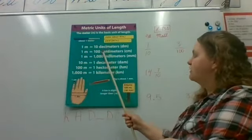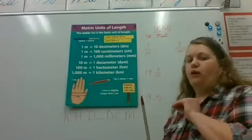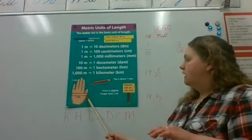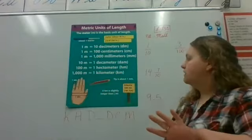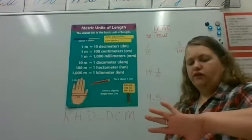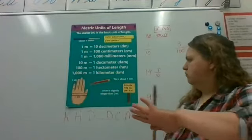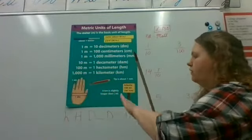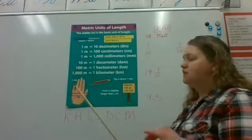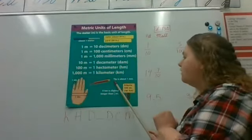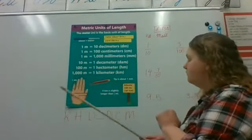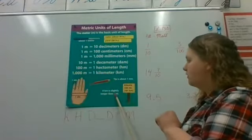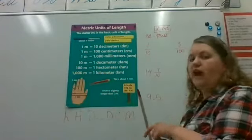Decimeters — deci is our small one; it takes ten decimeters to equal a meter. A decimeter is about the size from one side of your hand to your thumb. One centimeter is about the size of your pinky. The tip of your pencil is about one millimeter. A baseball bat is about a meter.